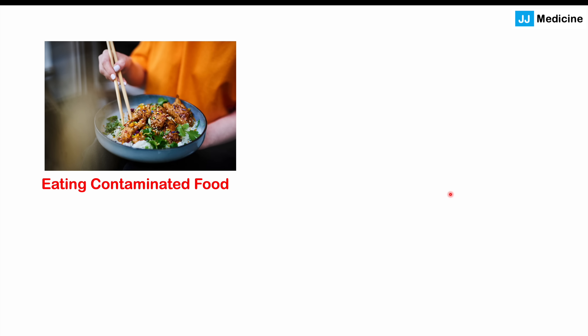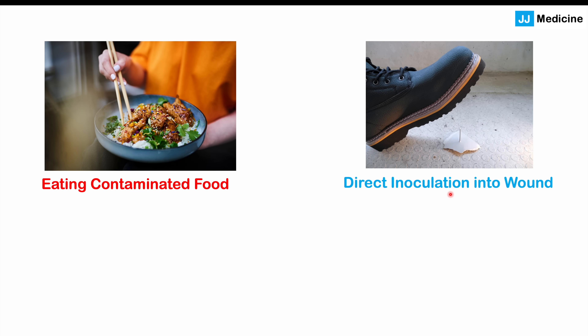There are a couple of ways to get infected by this bacteria. The most common is by eating contaminated food. The other way is through direct inoculation into a wound. Because Bacillus cereus is present in soil, a puncture wound to the foot, hand, or another body part with soil contact can introduce the bacteria from soil into the wound.